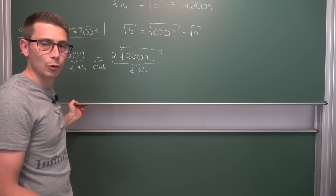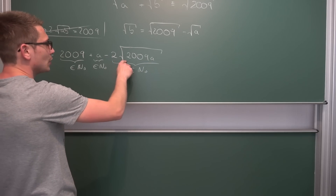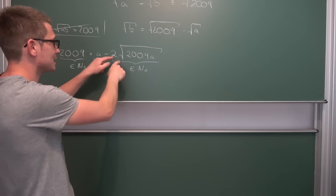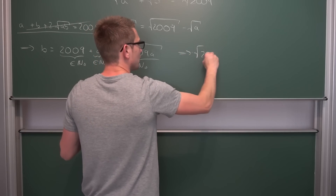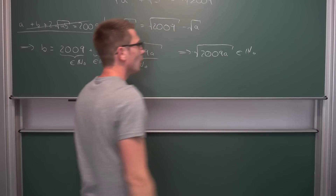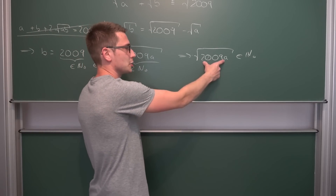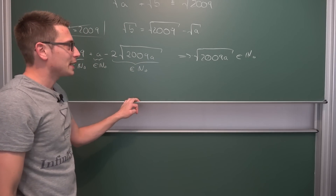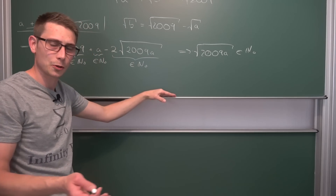We can go a step further. Since the integers are closed under multiplication, if 2 times the square root of 2009 times a is an integer, and since 2 is an integer, we must also have that the square root of 2009 times a is an integer. Now, when is this an integer? Well, if 2009 times a is a perfect square. Maybe we can factorize 2009 — it's not a prime number — and extract more useful conditions from our number.